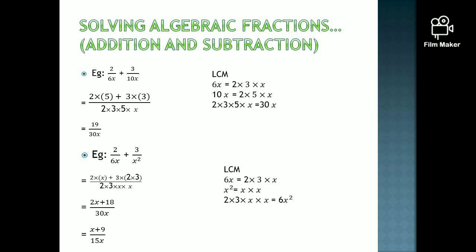So you can write 3 into 2 into 3. If you simplify, 2 into x is 2x plus 3 into 2 into 3 is 18, giving 2x plus 18 over 30x squared. You can see both denominator and numerator can be cancelled by 2. With that, you can write the simplified version as x plus 9 over 15x.